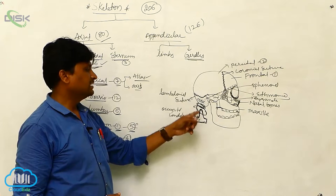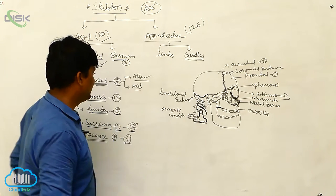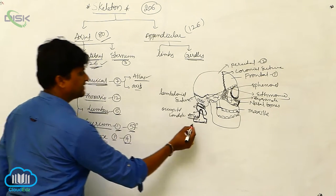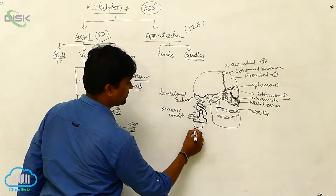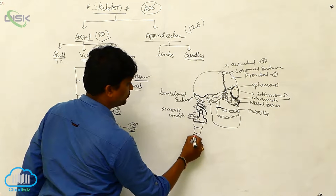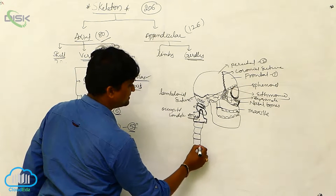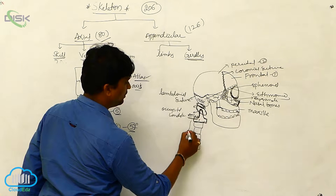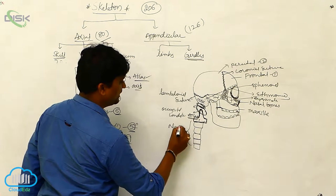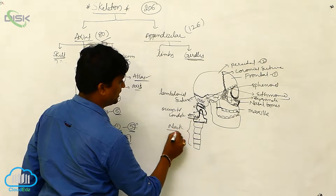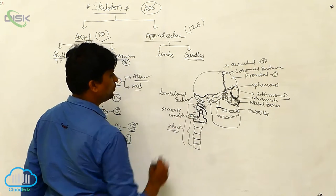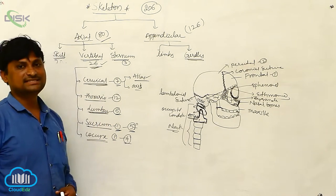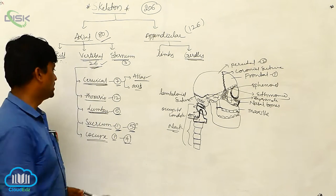The remaining bones — three, four, five, six, and seven — all form the neck area. All seven bones together are considered the cervical vertebra.